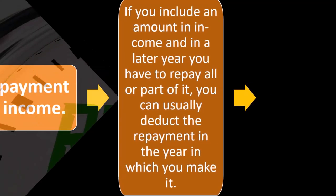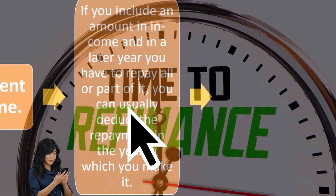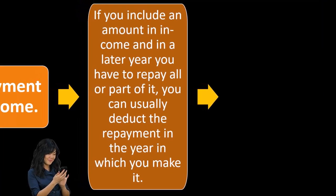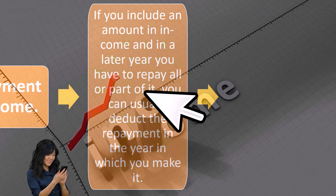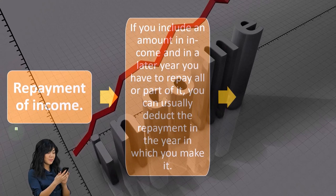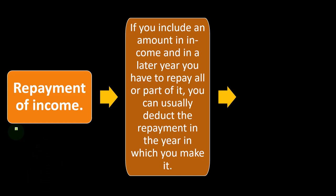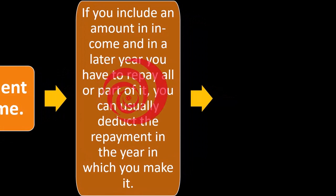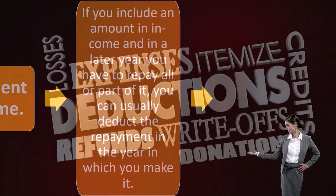Repayment of income. If you include an amount in income, and in a later year you have to repay all or part of it, you can usually deduct the payment in the year in which you make it. So if you had income but now there's a refund — sales returns and allowances — and you recorded income in a prior year, say 2021, and now in 2022 you had to pay back money recorded as income in the prior year, you don't go back and amend your prior return. Usually you take care of it in the current year by deducting a sales return or something similar.